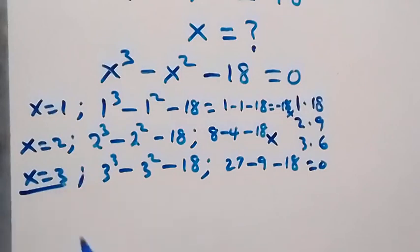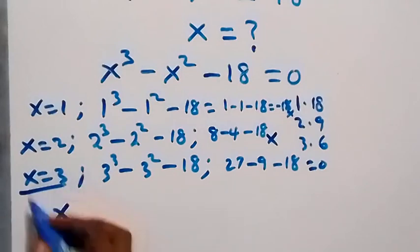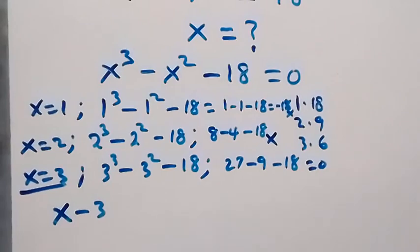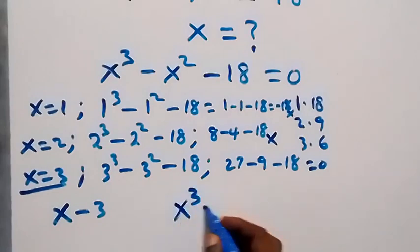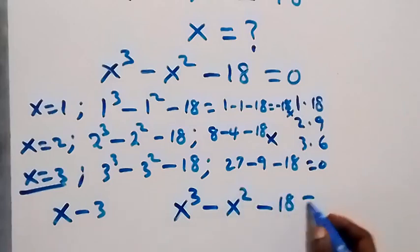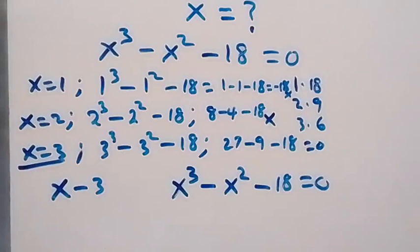Since x=3 gives zero, it implies that 3 is a root, and therefore x - 3 is a factor of this polynomial. To get the other factors — which will be a quadratic — we can use any method of our choice on x³ - x² - 18 = 0.